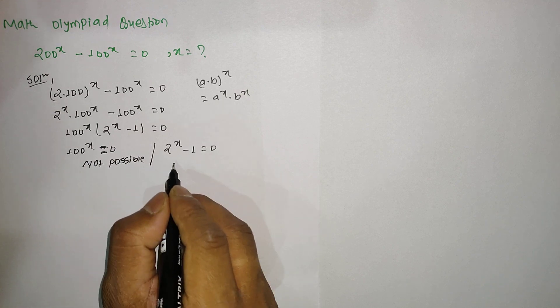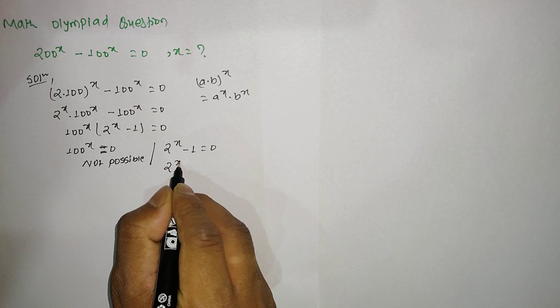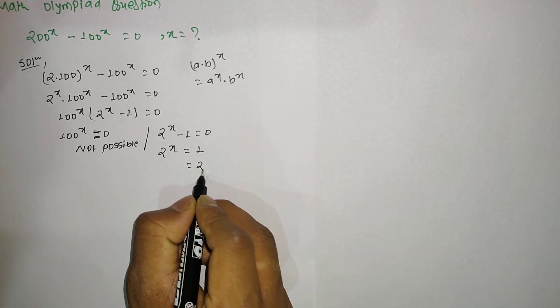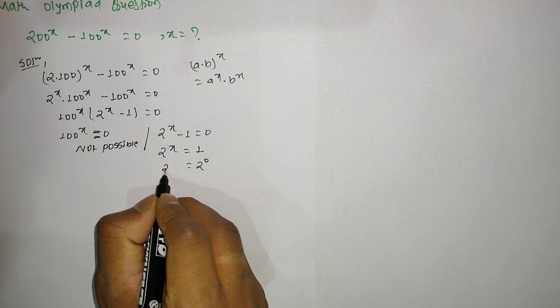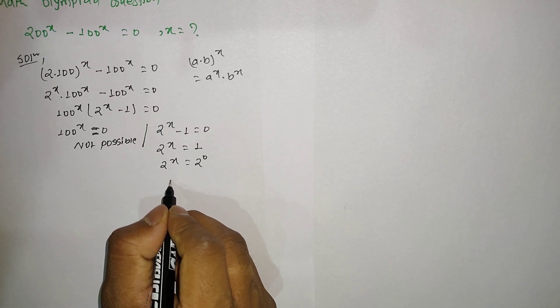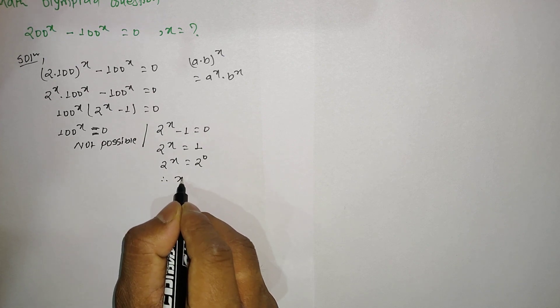From here we can say that 2^x = 1, and 1 means 2^0. So here we can see that both left-hand side and right-hand side have the same base, so we can equate the exponents: x = 0.